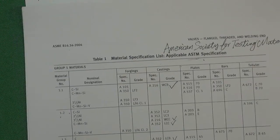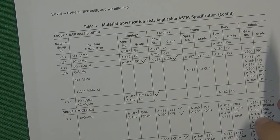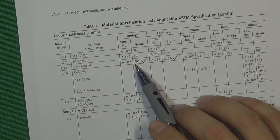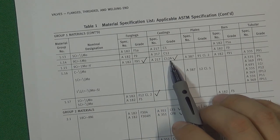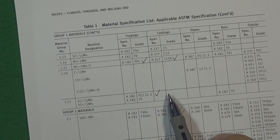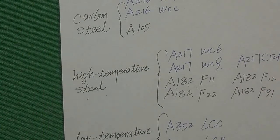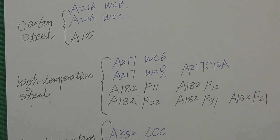Some materials don't have a corresponding casting form. In our material list for high temperature steel, forged F91 corresponds to casting C12A, but F12 has no casting form equivalent. That is the basic principle for high temperature steel we covered today. I hope you now understand. If you have any questions, please leave a comment. If you like this channel, please subscribe. Thank you for watching, see you next time!